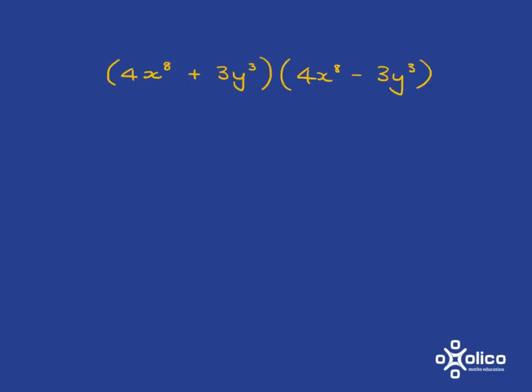Now let's have a look at a monster like this we might want to multiply out. We recognise immediately we've got the plus, the minus, and everything else is the same. So we know we're going to be in a situation where our answer is going to be 4x to the 8 squared minus 3y cubed squared.